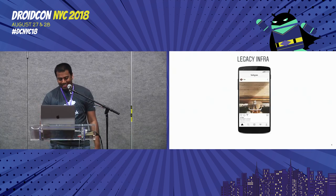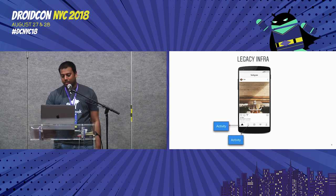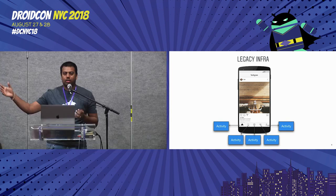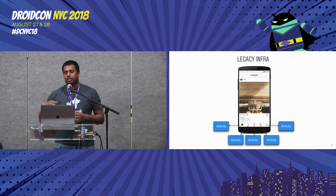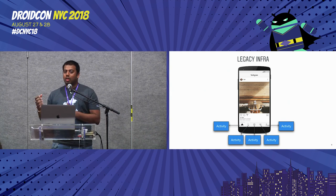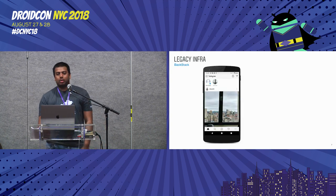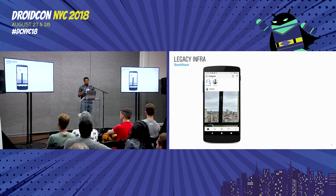Let me go deeper into how our legacy infrastructure used to work. From the diagram you can see that every tab in the old Instagram infrastructure was an activity — specifically a fragment activity, so those activities themselves could do fragment transactions. All these activities were managed by ActivityGroup, which was responsible for managing the lifecycle state, the activity stack of all these activities put together, all through a local activity manager which maintained every lifecycle of these activities.